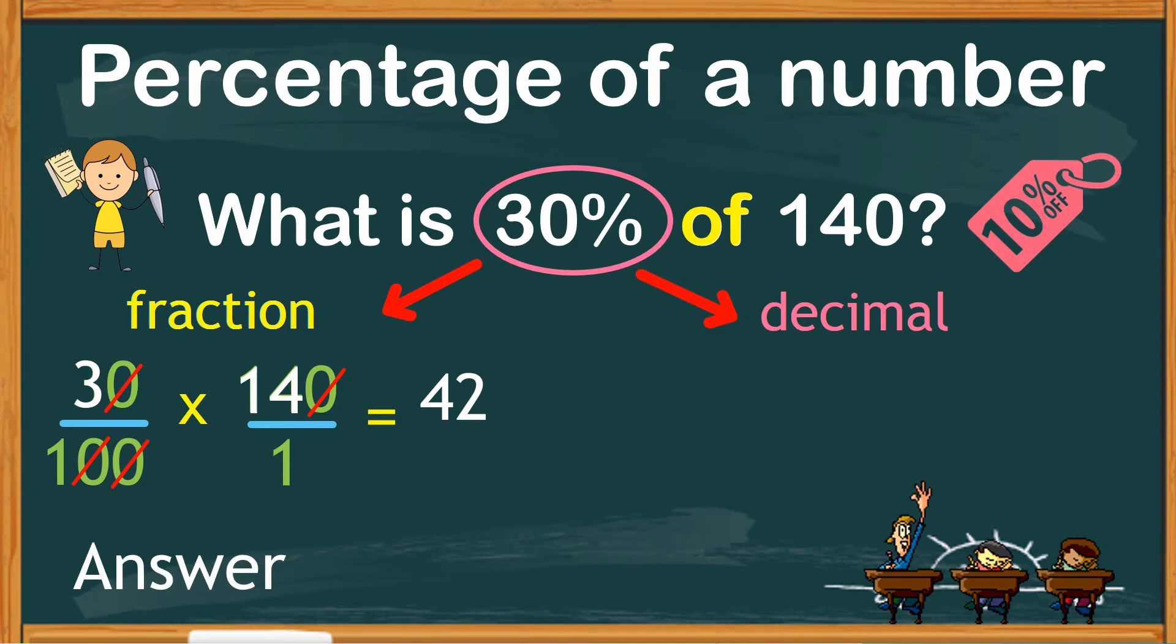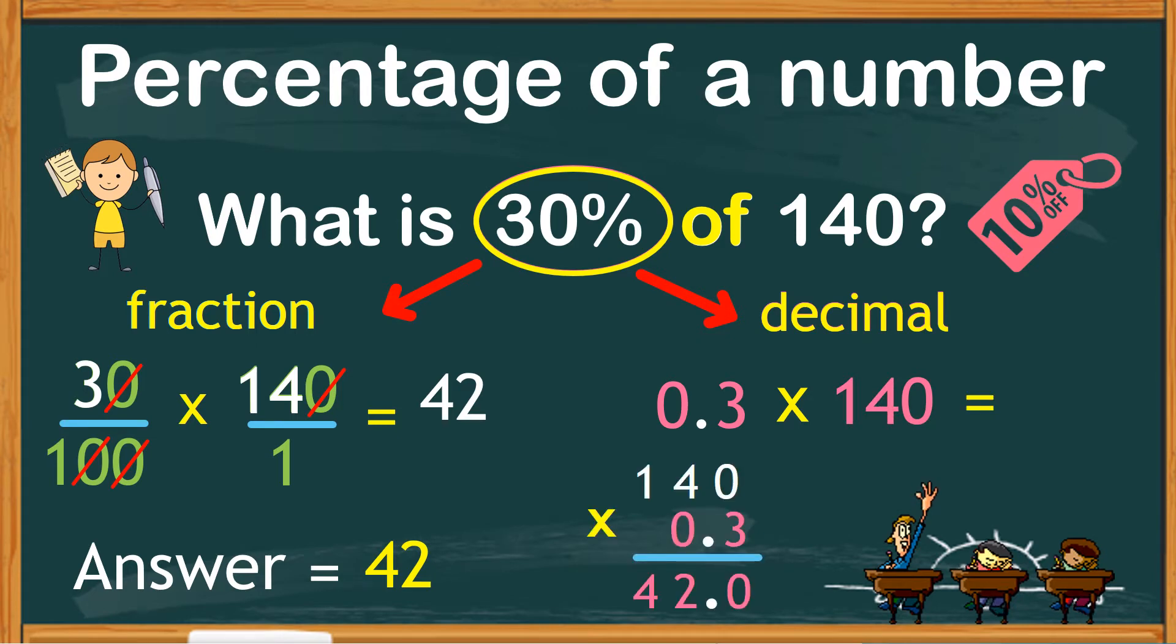Another way to find the percentage of a number is by changing percent into decimal. This other method is much easier, especially when you're using a calculator. Just change 30% into a decimal, which is 0.3, and multiply by 140, and the product is 42.